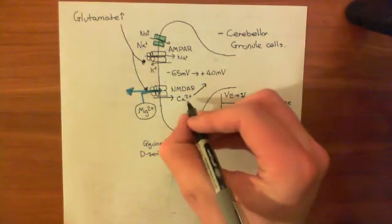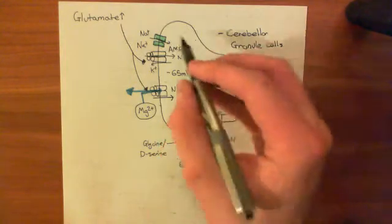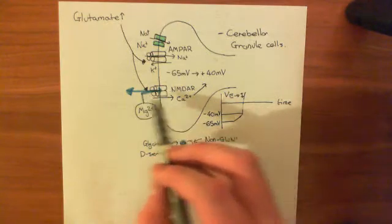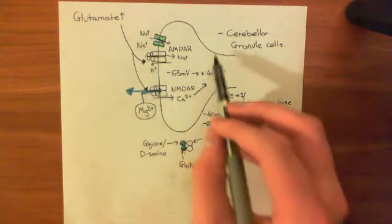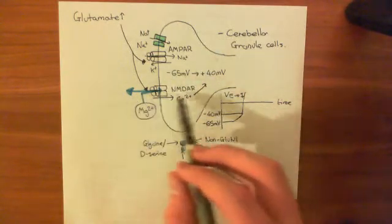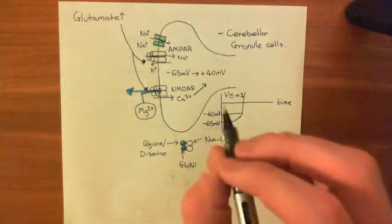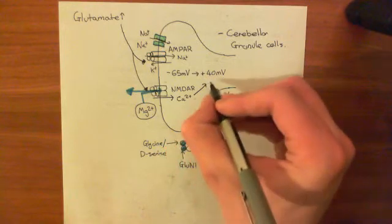So if you get too much calcium coming into the cell, which you will do because you're releasing so much glutamate that these NMDA receptors are just going to be open continuously now, the cell membrane is going to be continuously depolarized, and these NMDA receptors are just going to continue conducting in calcium.